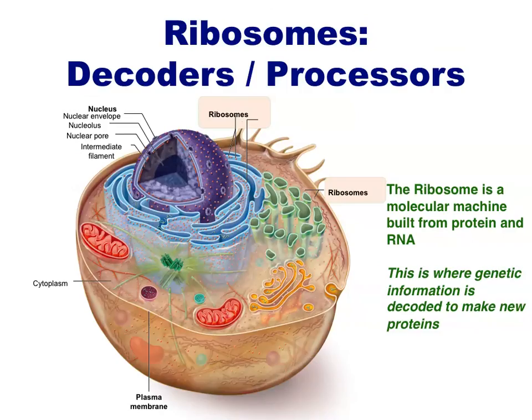Our cells might have ribosomes in different parts of the cell. Many are found in a network of folded membranes near the nucleus. These ribosomes are not separate membrane-bound organelles. Instead, a ribosome is like a little protein machine that acts as a decoder or processor. Through a process known as translation, these ribosomes read the genetic instructions sent from the nucleus and decode the sequence of nucleotide bases into a sequence of amino acids in a protein.